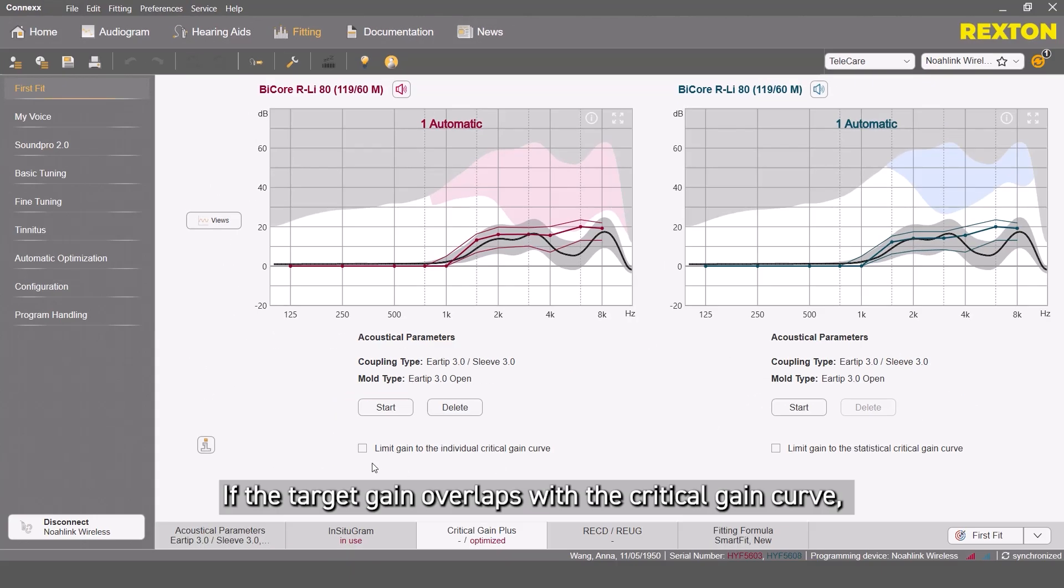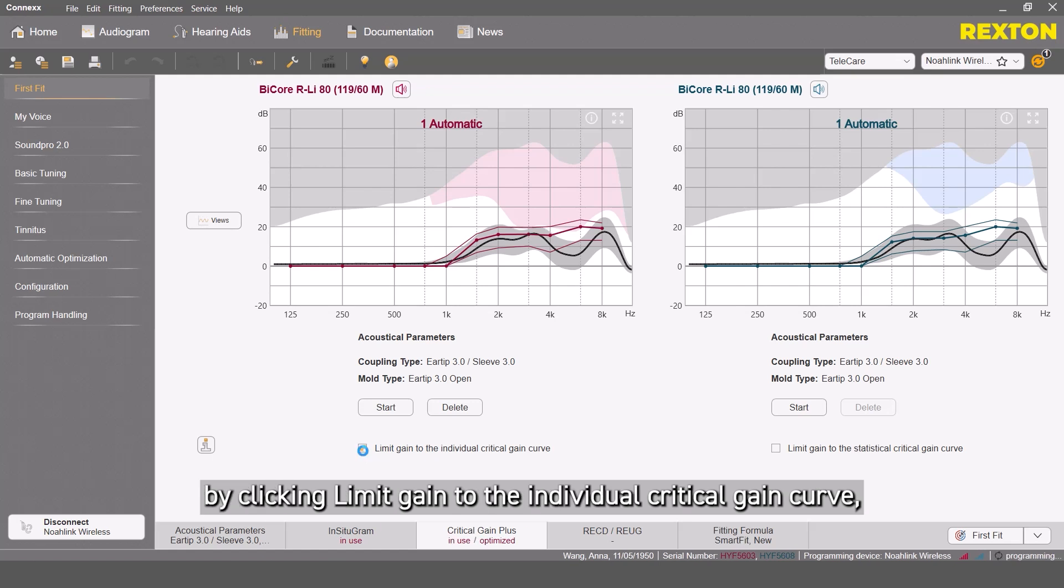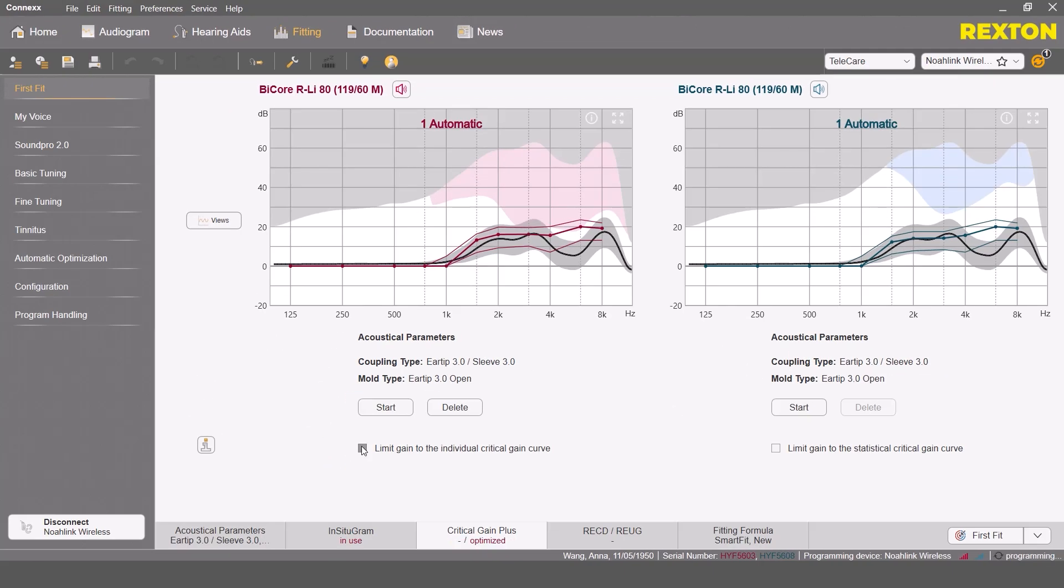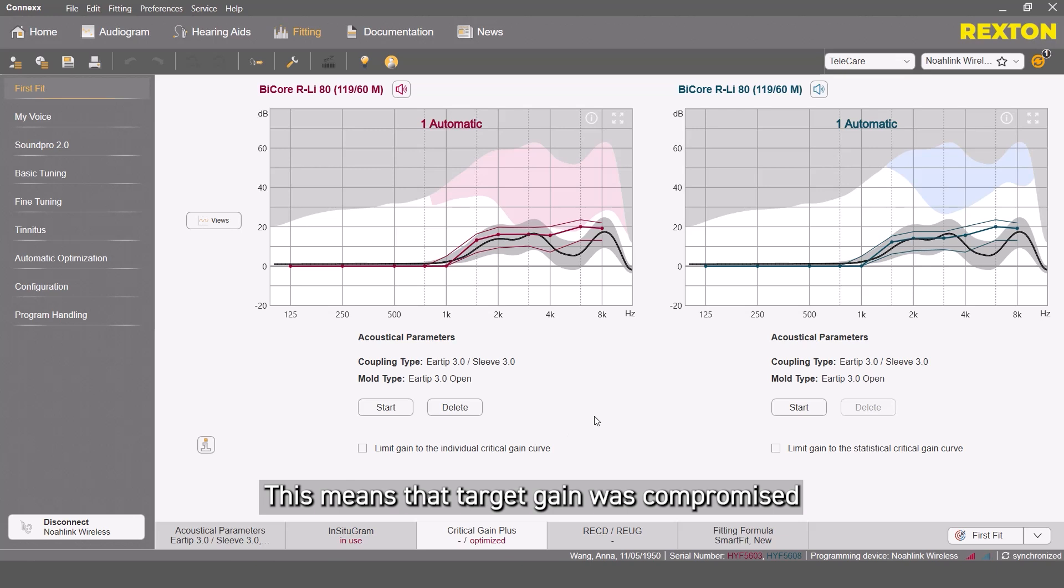If the target gain overlaps with the critical gain curve, by clicking Limit Gain to the individual critical gain curve, gain will be reduced to avoid the area of critical gain. This means that target gain was compromised as a trade-off for feedback stability.